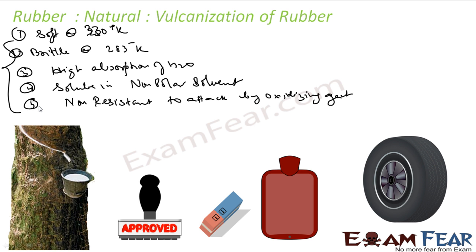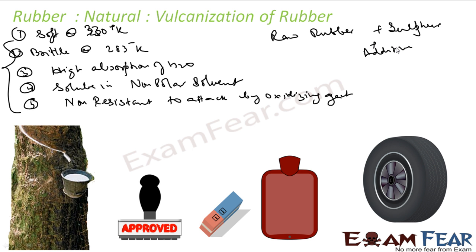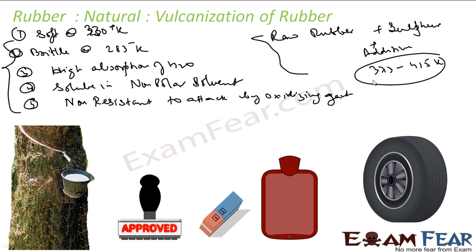To improve the quality of rubber, we follow a process called vulcanization. Vulcanization is mixing sulfur with raw natural rubber, along with some appropriate additives, at a high temperature between 373 to 450 Kelvin. When you process this raw rubber, you get vulcanized rubber. In vulcanized rubber, you have cross-links at the reactive sites of the double bonds, and the rubber gets stiffened and hard.